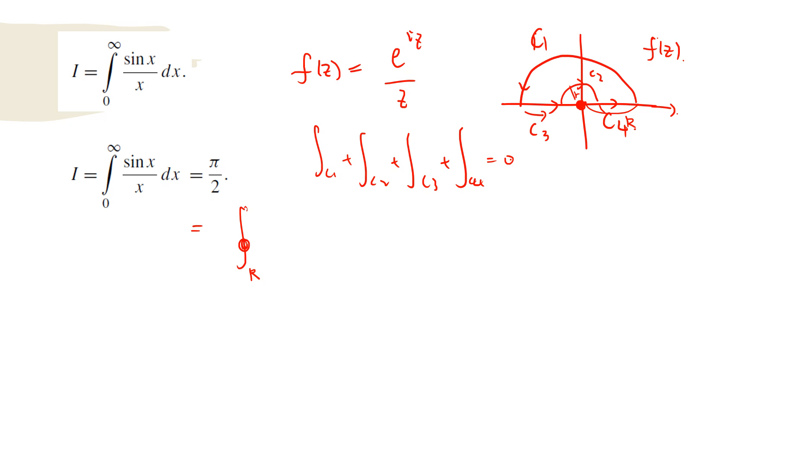Plus c2, c2 is just small circle r, plus c3. C3 is minus large R goes to small r, plus c4, which goes to large R.